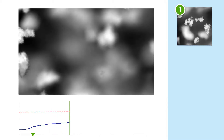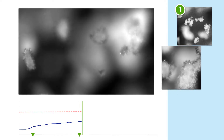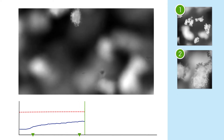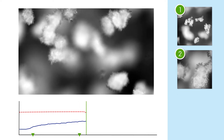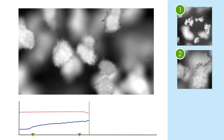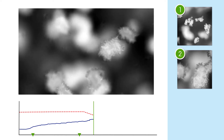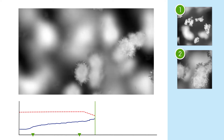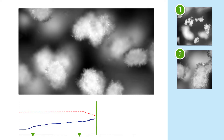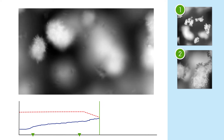Next, something interesting happened. Fine needles began to grow out of the agglomerated seeds, forming delicate dendritic structures. This is something that would be very difficult to see with an offline microscope because the mechanical action of sampling would probably destroy them.